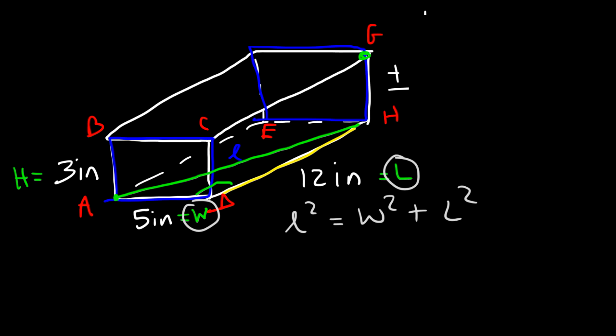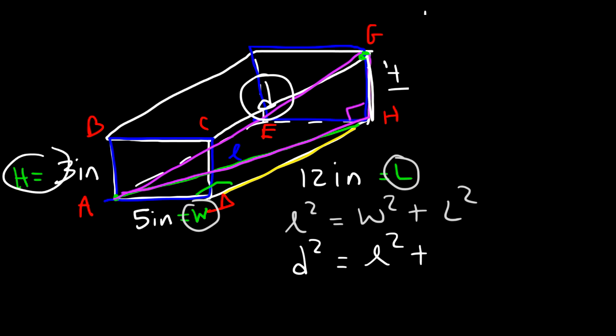Now what we need to do is draw another right triangle between A and G. So focus on this right triangle, and let's say that this is the diagonal length D. So D squared is going to be L squared plus this segment which is H. So it's L squared plus H squared. Now I'm going to replace L squared with W squared plus L squared. So D squared is really W squared plus L squared plus H squared.